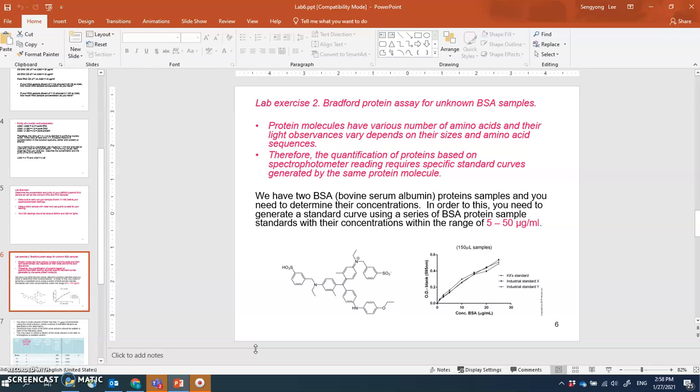Instead you have to use a chromogenic substance. Bradford uses a chromogenic substance called Coomassie blue. This dye solution gives a blue color and can absorb in the visible light range, around 590 to 595 nanometers.